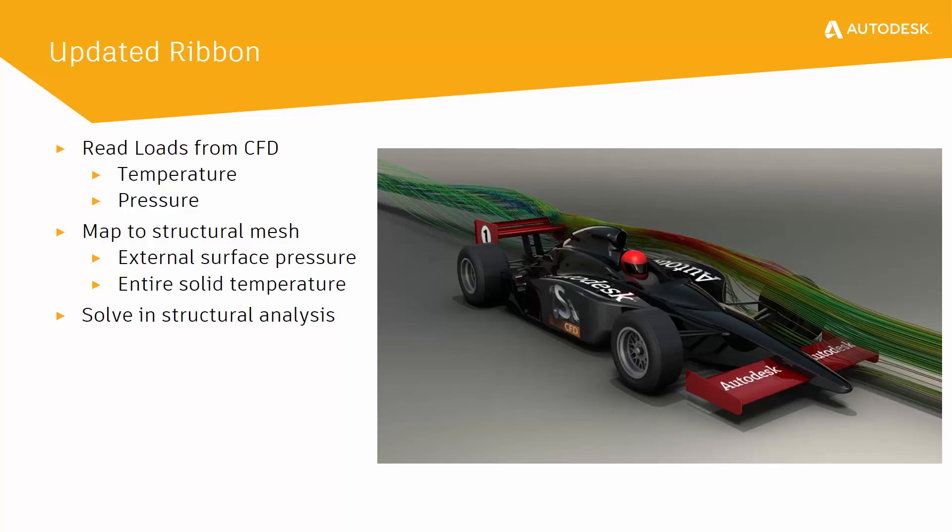Both temperature and pressure values can be carried over to Autodesk Nastran NCAD. Since the meshes on your parts will be different, a mapping process is used to take the results from the CFD mesh and map them to the corresponding mesh in Autodesk Nastran NCAD. This can map external surface pressures and the entire temperature profile for the solid model, then being included in your structural analysis.